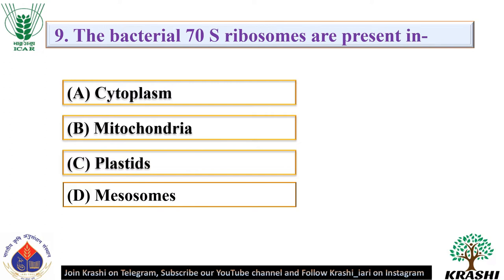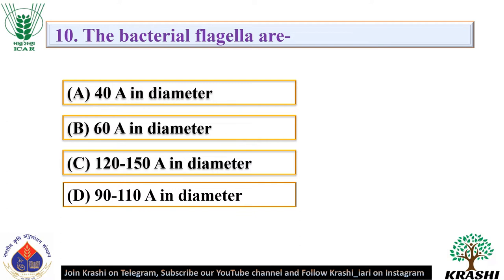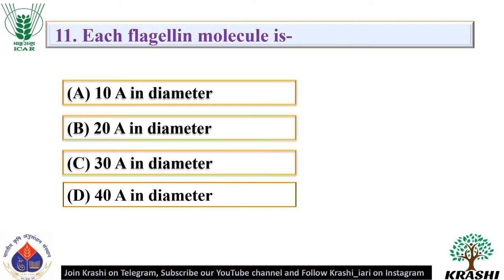Question number 8: Bacterial 70S ribosomes are present in — they are present in the cytoplasm. Question number 10: The bacterial flagella are — they are 120 to 150 angstrom in diameter. Question number 11: Each flagellin molecule is. The correct answer is option D — 40 angstrom in diameter.